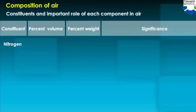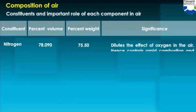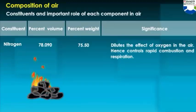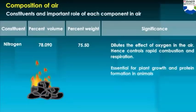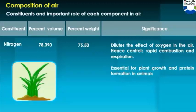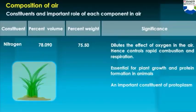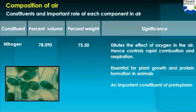Nitrogen: percent volume 78.09%, percent weight 75.50%. Significance: it dilutes the effect of oxygen in the air, hence controls rapid combustion and respiration. It is also essential for plant growth and protein formation in animals, and is an important constituent of protoplasm.